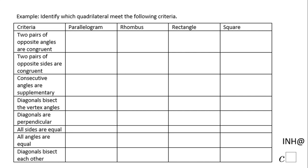Welcome, or welcome back, to C-squared. In this example, we look at the properties of four special quadrilaterals: parallelogram, rhombus, rectangle, and square. You have two choices — you can go by column or by row. I'm going to go by column, starting with the first column: parallelogram.